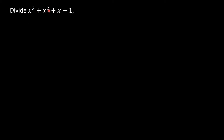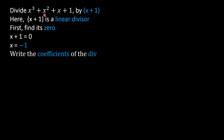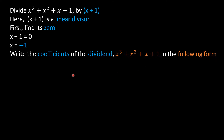To understand synthetic division let us solve a few problems. Divide x³ + x² + x + 1 by x + 1. Here the divisor x + 1 is a linear polynomial because its degree is 1. First of all let us find the zero of the divisor — put x + 1 = 0, which gives x = -1. Now we will write the coefficients of the dividend: 1 (coefficient of x³), 1 (coefficient of x²), 1 (coefficient of x), and the constant term 1.